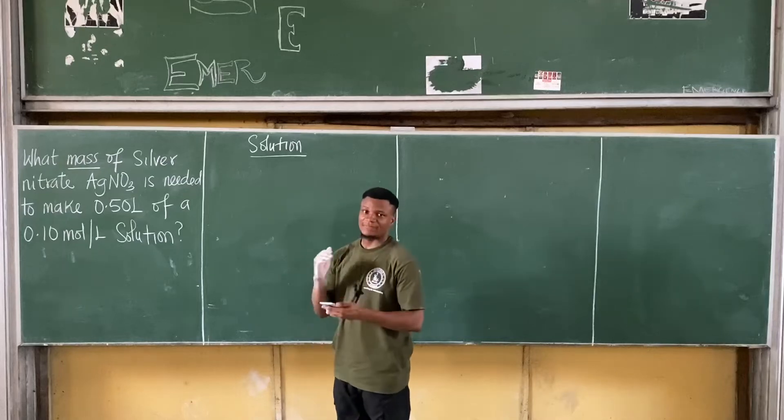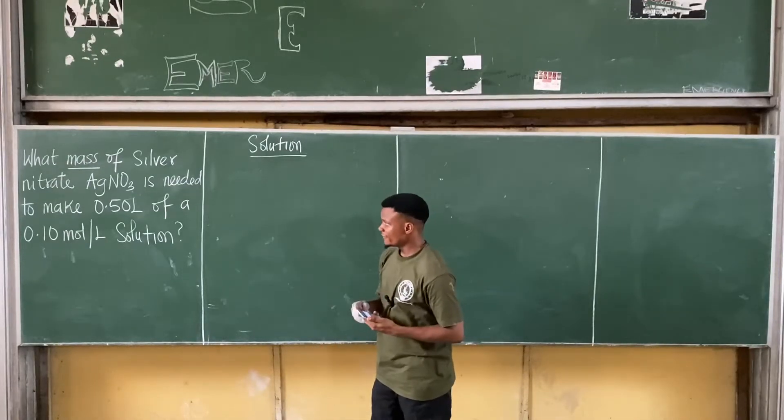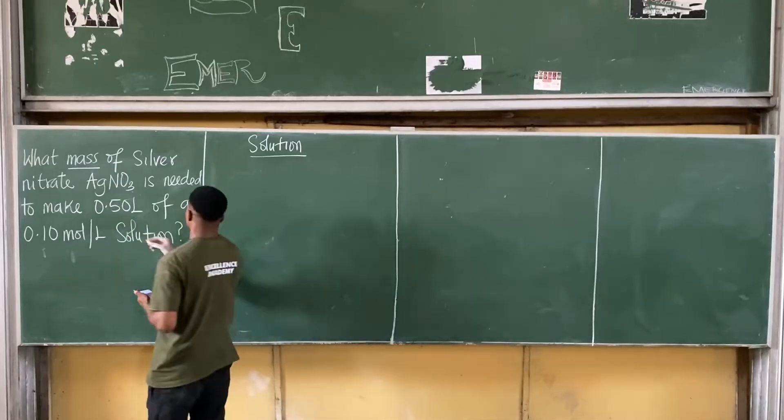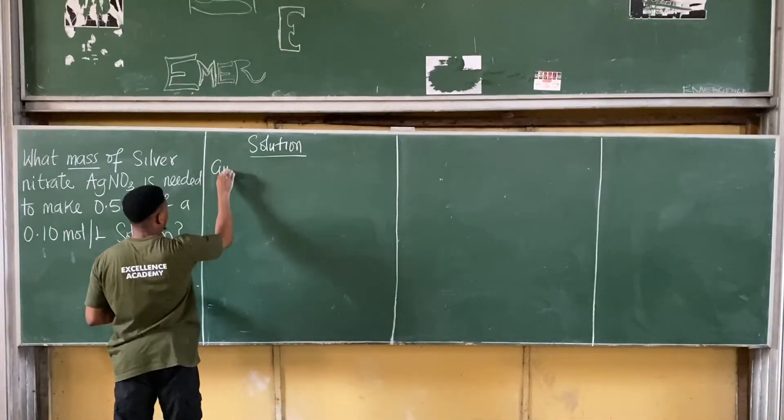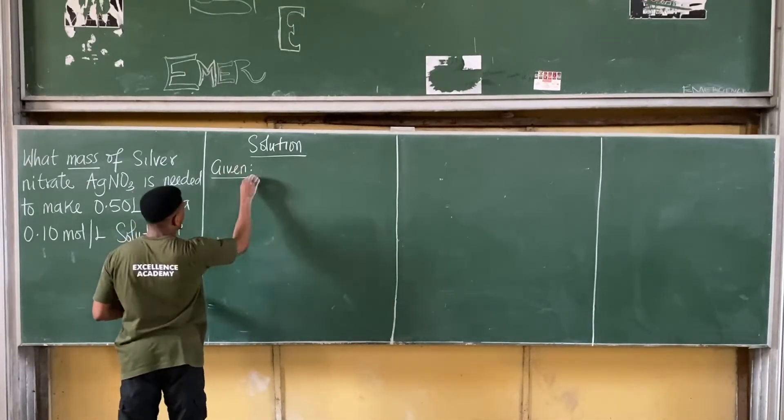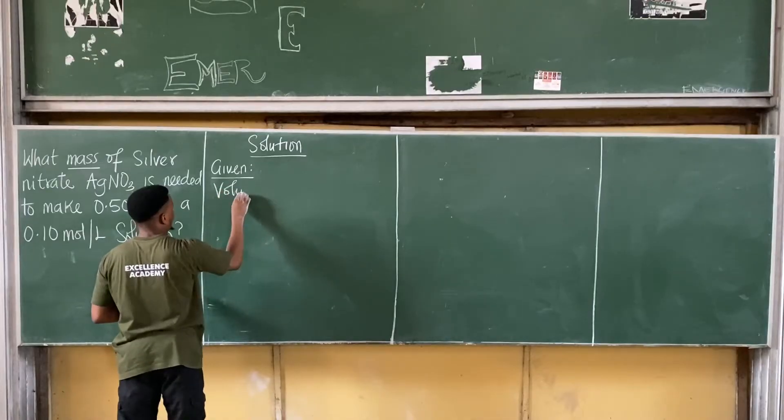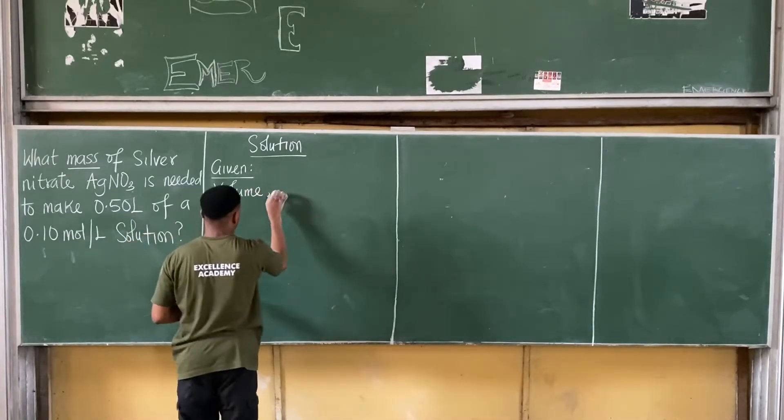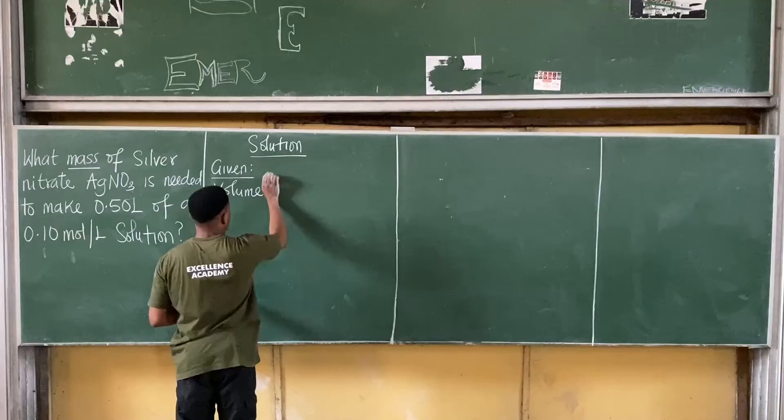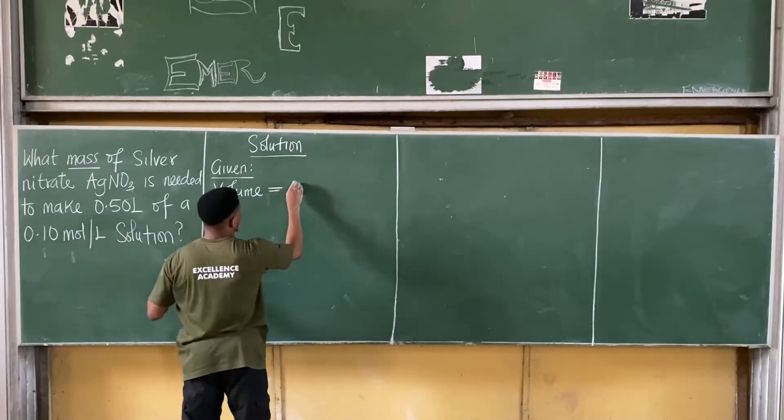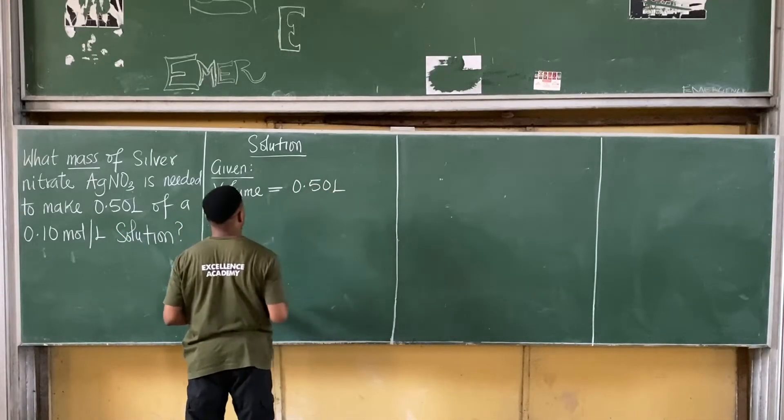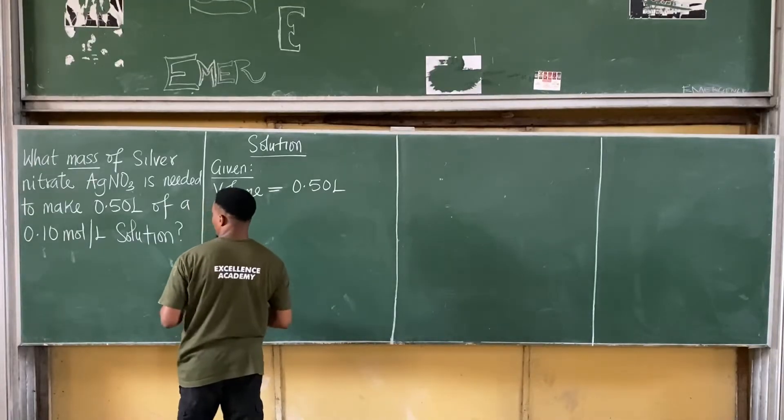I will take it through a step by step process in solving this. First things first, what am I given? I'm given the volume. Volume has been equal to 0.50 litre. That's the first one.